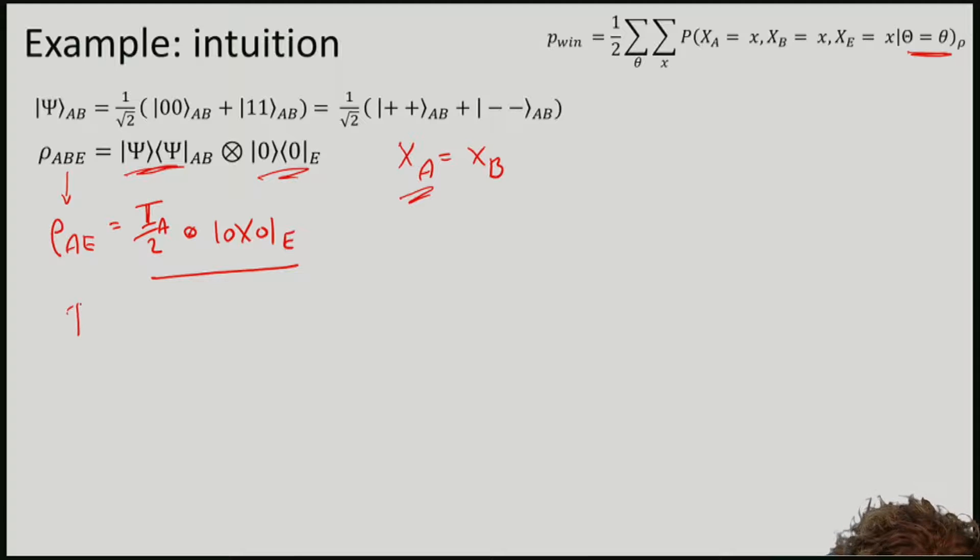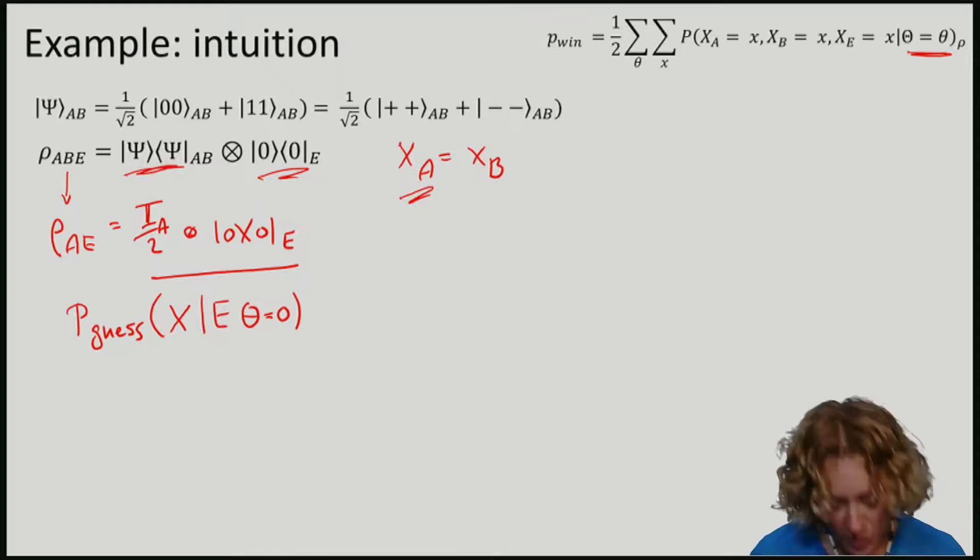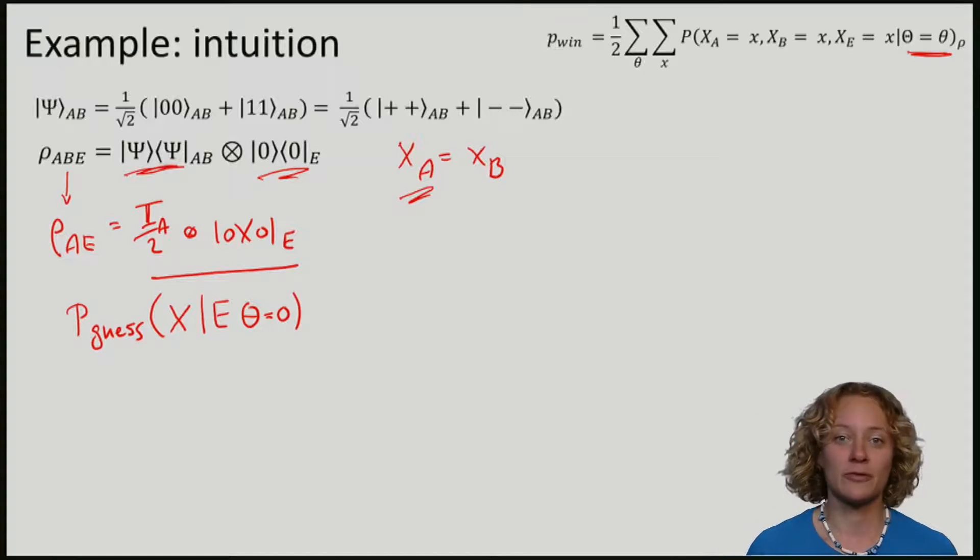So let me write down the probability that Eve guesses a measurement outcome x given E, and I will just do that for a measurement in the standard basis, but it will be exactly the same calculation for the Hadamard basis.